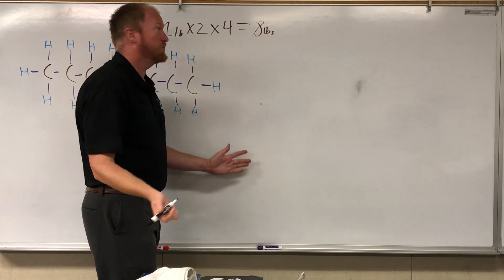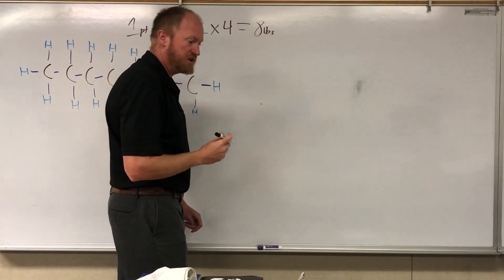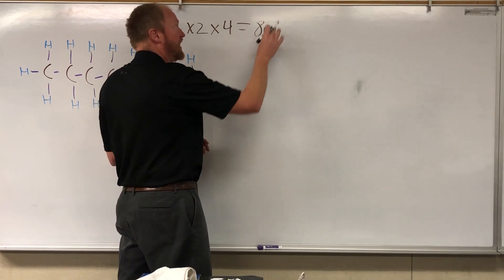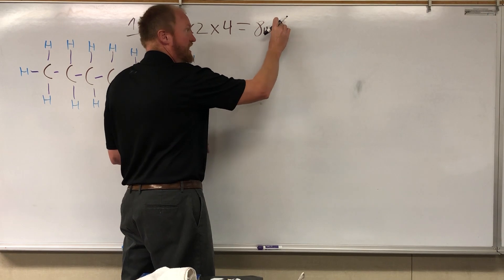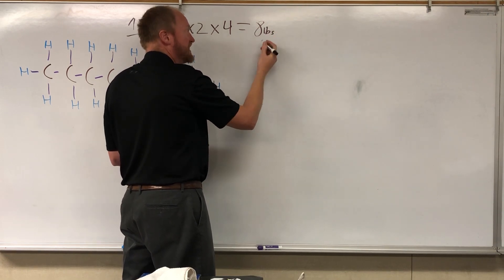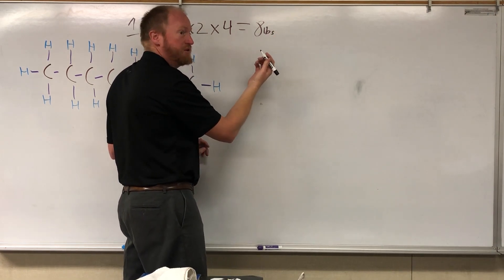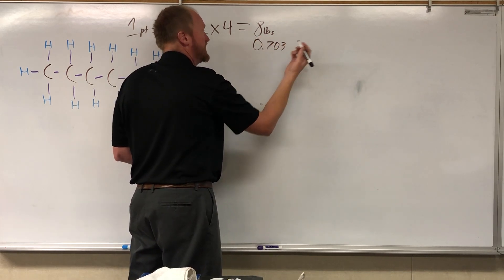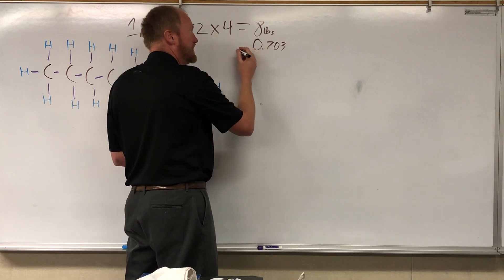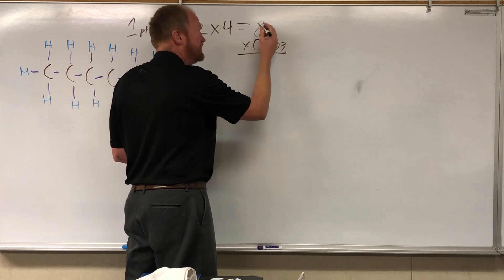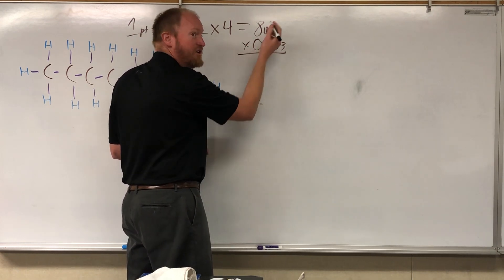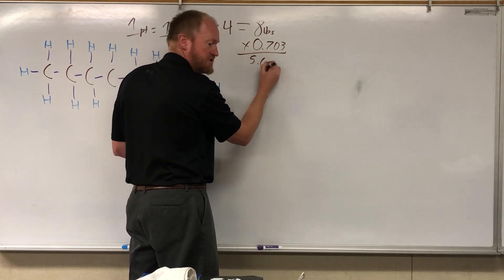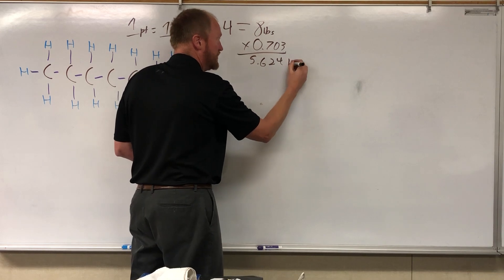Now gasoline is lighter than water, so what we need to do is figure out the weight of a gallon of gasoline. We multiply the weight of water by the comparative density of gasoline. Water has a density of one; gasoline, 0.703. So multiply that and you find out that a gallon of gasoline weighs approximately 5.624 pounds.